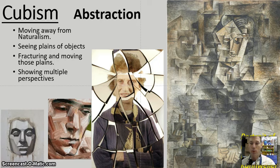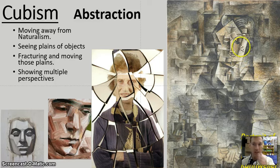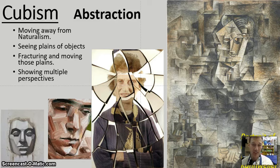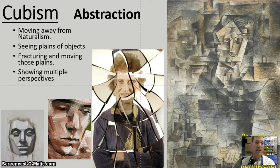This portrait of Kahnweiler by Picasso gives kind of one view of his eye here, one view of his hair here, and his hair over here. They're all kind of fractured, and those planes are tilted to show something different than what you might see if you're painting in a naturalistic way.